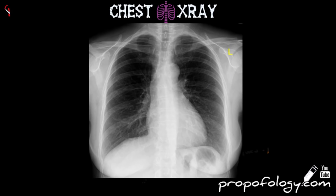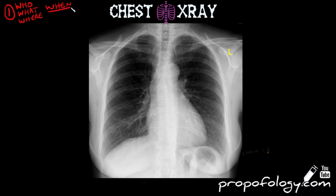There are five main questions you have to ask yourself before even starting to look at the components of a chest x-ray. Whose film am I looking at — are the patient's details correct? What film am I looking at, and what view is it in? Where was it taken — was it done in the emergency department, the x-ray department, ICU, etc.? When was it taken — today, yesterday, last month, last year? And why was it taken — why was it requested?